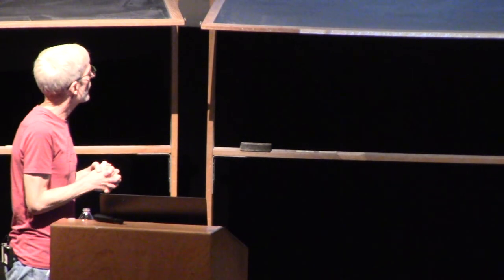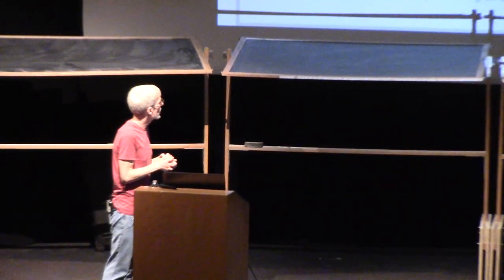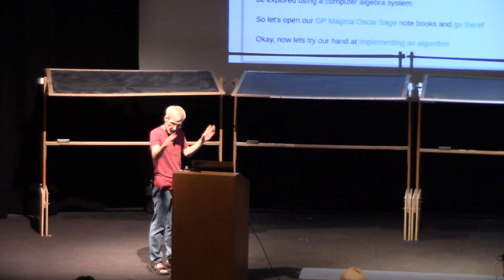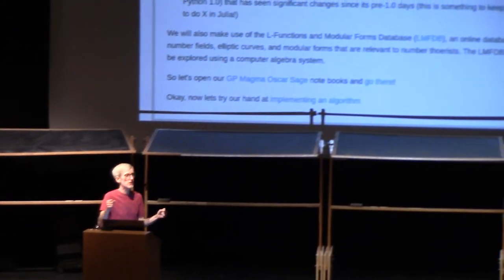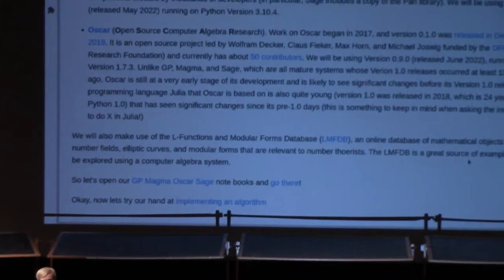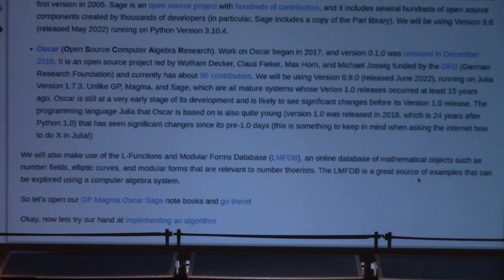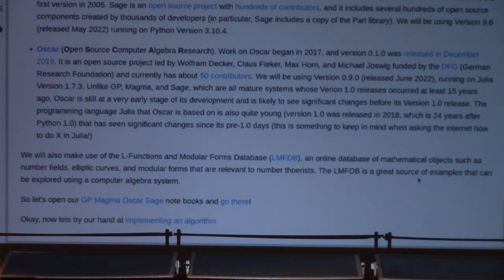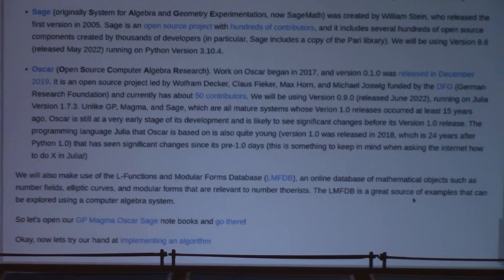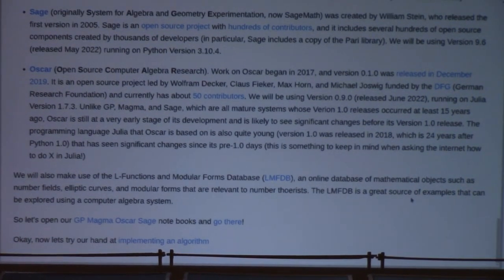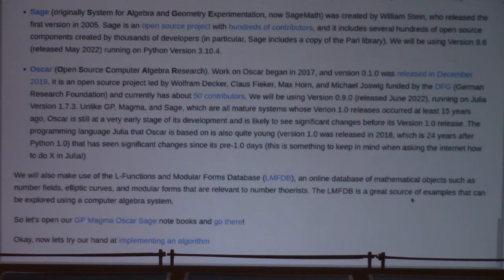The other key tool we're going to be using — and I want to introduce it both because it's valuable in its own right and because it's a great source of computational examples — is the L-functions and Modular Forms Database. This is an online database of mathematical objects including number fields, elliptic curves, modular forms, and many other things that number theorists are interested in. The grand vision of the LMFDB is to catalog all the objects we can that lie on either side of the Langlands correspondence: automorphic forms on one side and algebraic-geometric objects on the other, the most canonical example being elliptic curves and modular forms related via their L-functions.